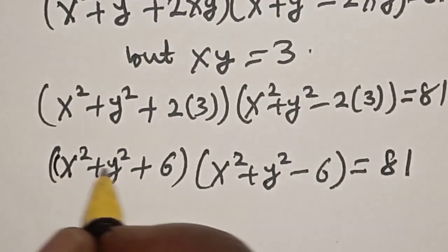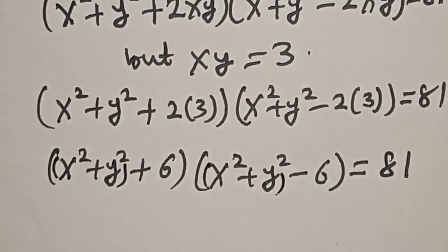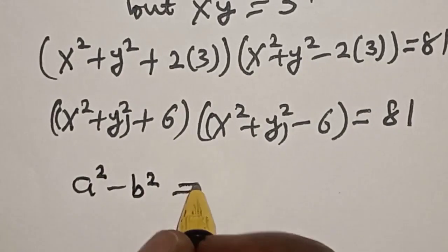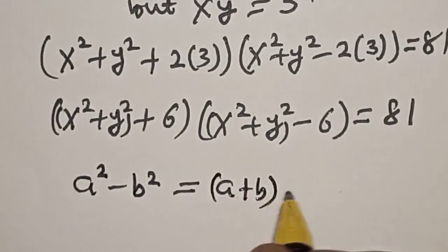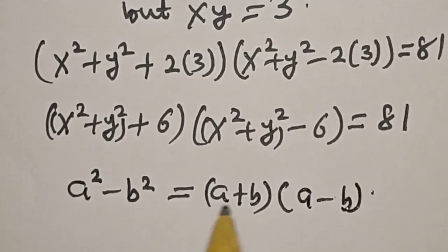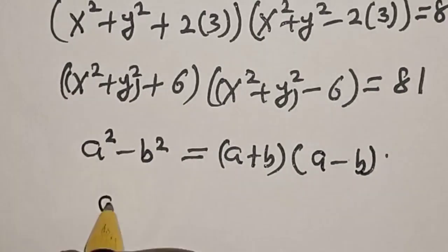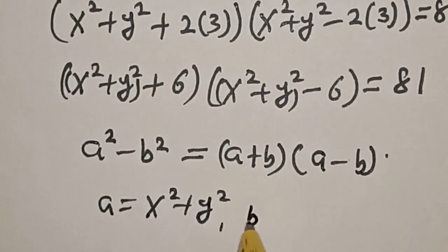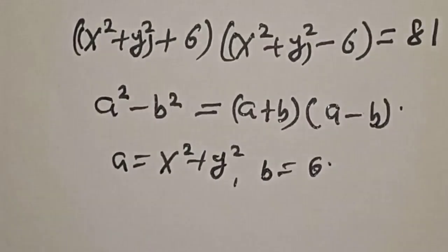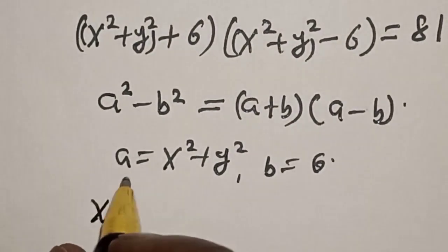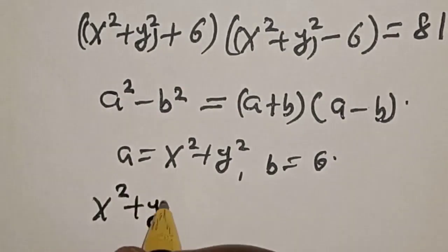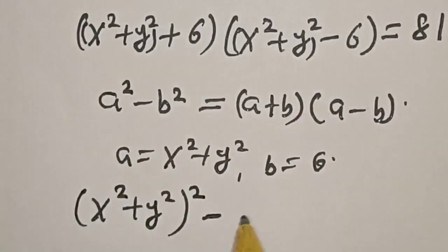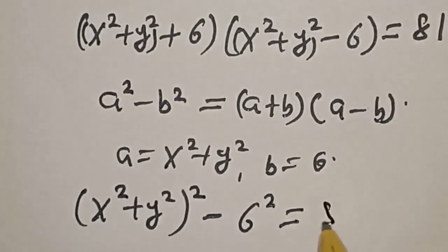Now we can apply the difference of two squares rule: a squared minus b squared equals a plus b multiplied by a minus b. In this case, our a is equal to x squared plus y squared, and b is equal to 6. So this becomes x squared plus y squared, all squared, minus b squared is equal to 81.